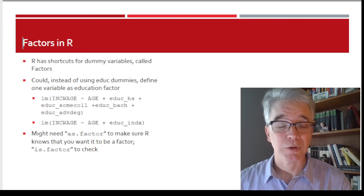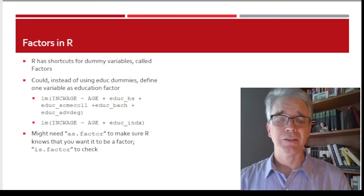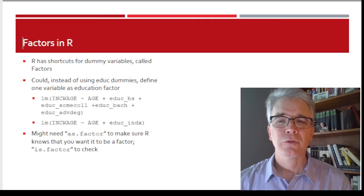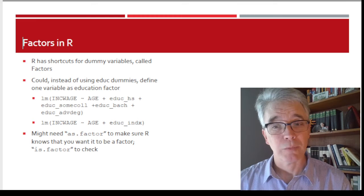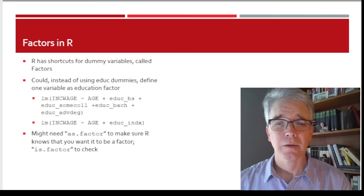So, again, I recommend you do it kind of the long way at the beginning just to get a sense of what's going on, and then jump to the shortcuts once you kind of understand how it's being done. So, for example, I have these educational qualifications, dummies for if the person has a high school degree, some college, a bachelor's degree, or an advanced degree. So, again, note I'm omitting the lowest category. The person doesn't even have a high school degree.